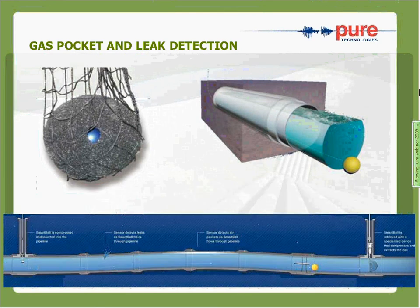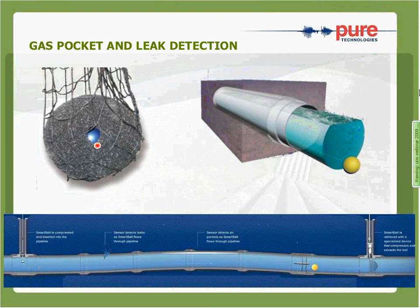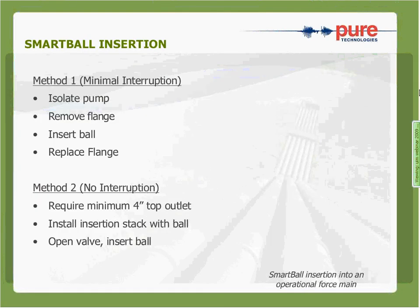First, we'll talk about a convenient tool to find pockets of trapped gas and leaks in pressurized pipes. The technology we've been using is called SmartBall. It's an instrumented ball inserted into the flow stream of a force main, allowing it to roll with the flow in the pipeline and be captured at a point downstream. Data is collected from the ball and analyzed to identify and locate leaks and pockets of trapped gas in the pipe. The ball essentially consists of a two-inch aluminum alloy shell containing a data acquisition system, surrounded by a foam shell that provides additional surface area to propel the ball and ensure a quiet traverse of the pipe for high-quality acoustic data.